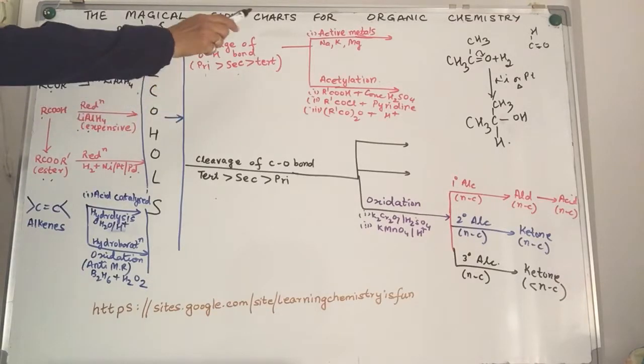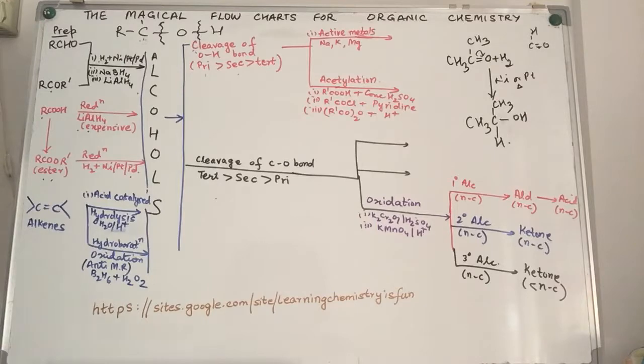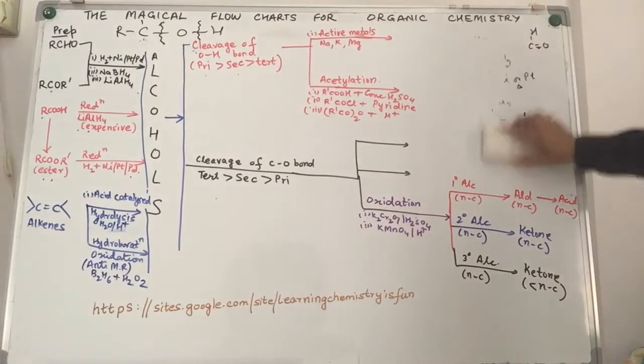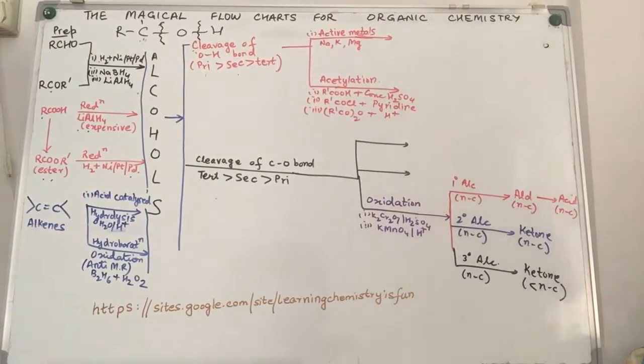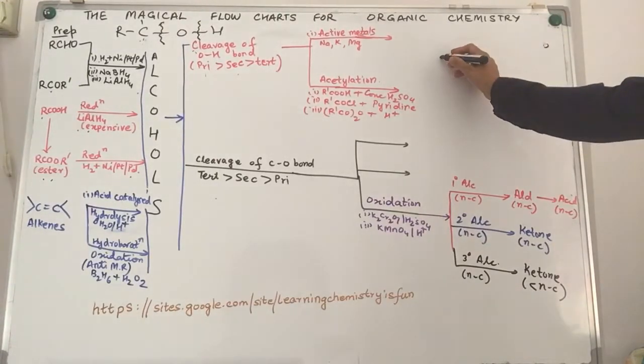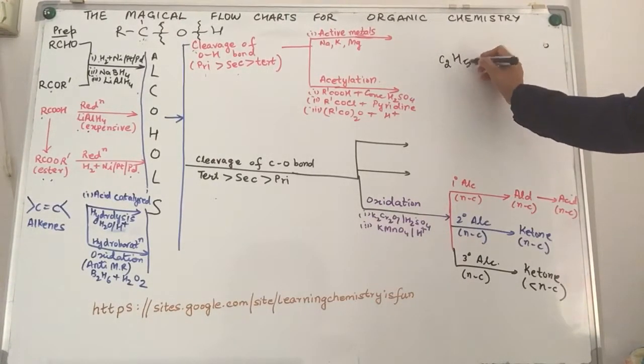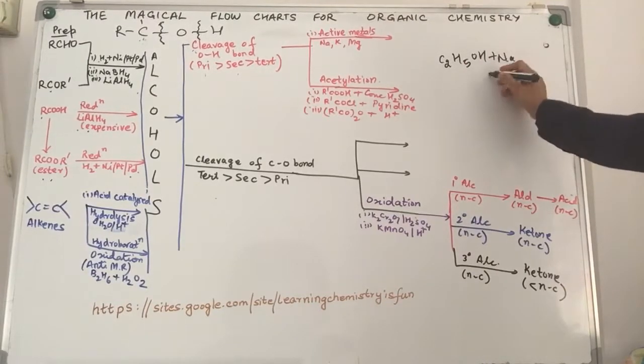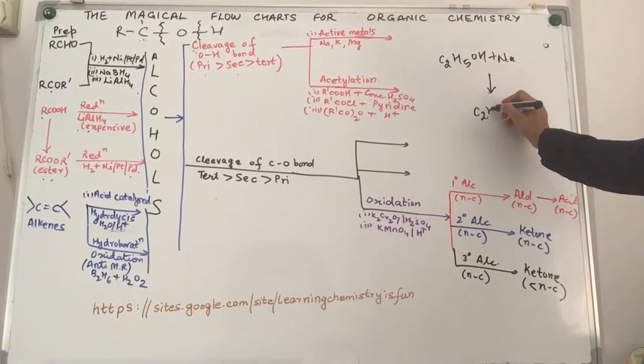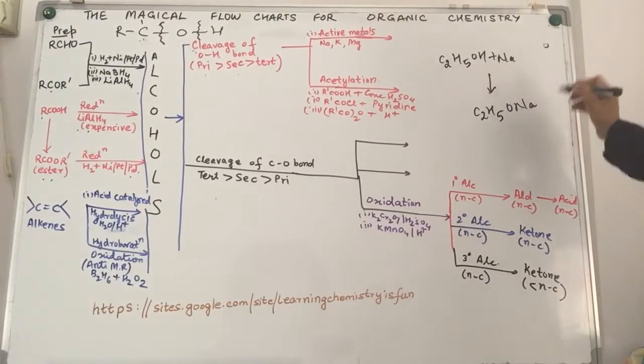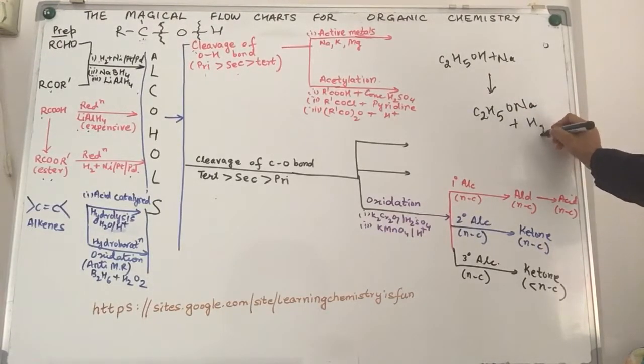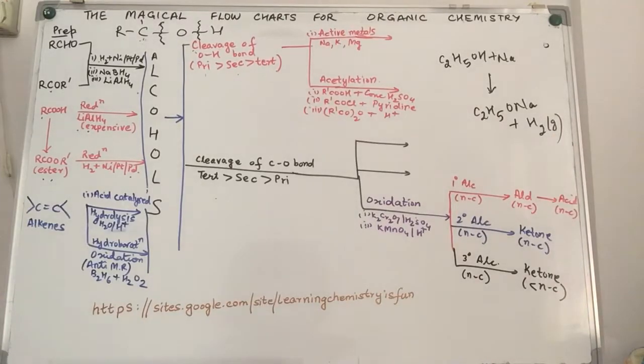First set of reactions: cleavage of the OH bond. We have two categories of reactions. When I'm talking about reaction of an alcohol with active metal like sodium, potassium, magnesium, what you have to do is simply take the alcohol C2H5OH and react it with sodium metal to give us C2H5ONa as simple as that, and hydrogen gas is liberated. This makes your study as well as recall of organic chemistry easy.